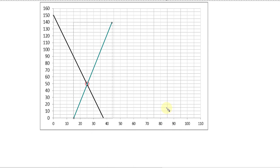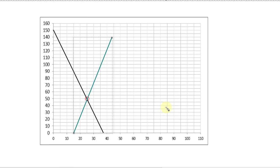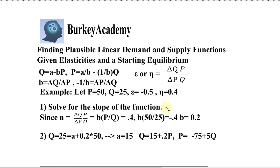So hopefully that will help you see a simple set of steps that you can use to take an initial starting price and quantity, a price elasticity of demand and supply, and come up with a plausible linear demand and supply function to represent them. As always, if you have questions, leave them in the comment or question section below. This is Burkey Academy, signing out.